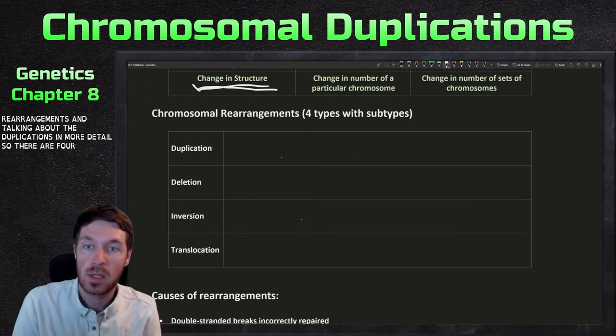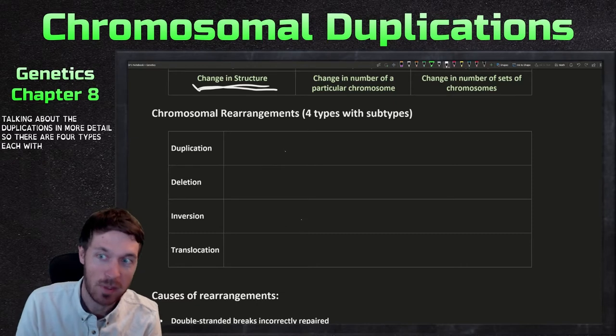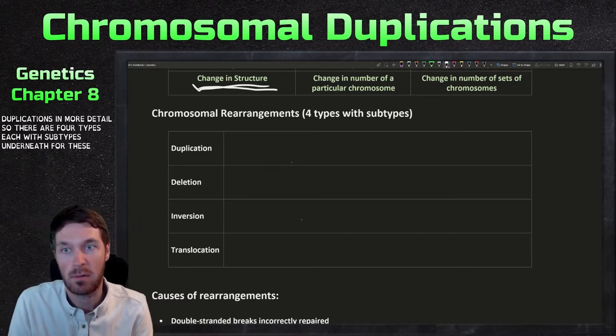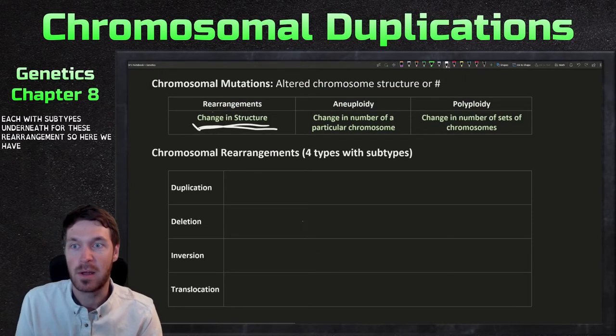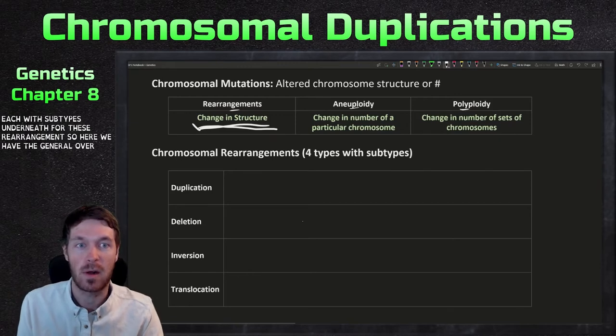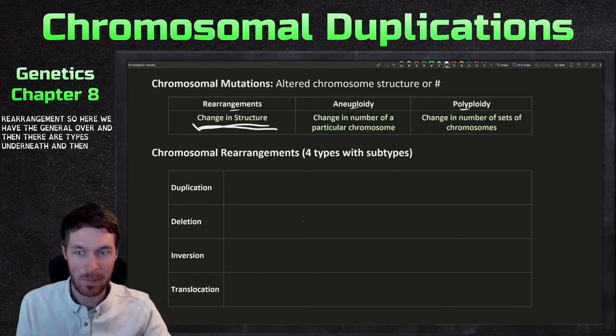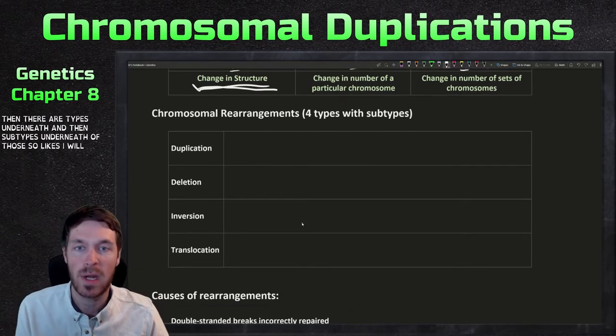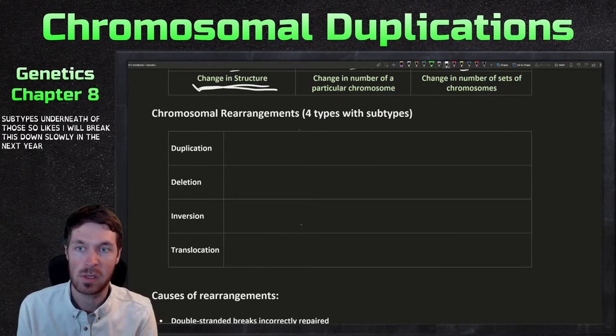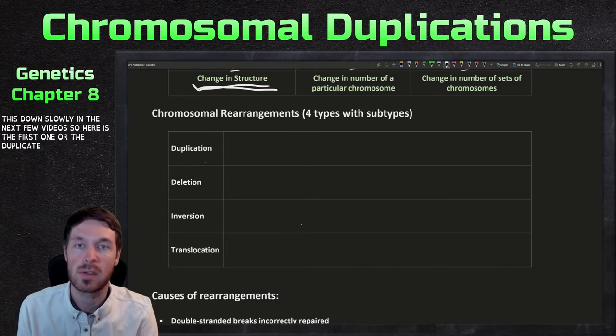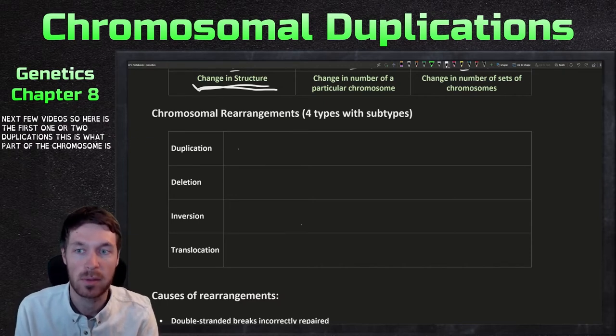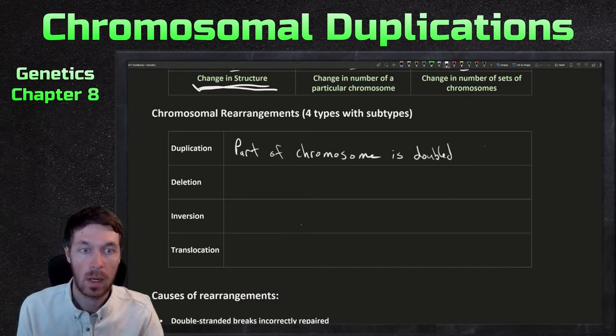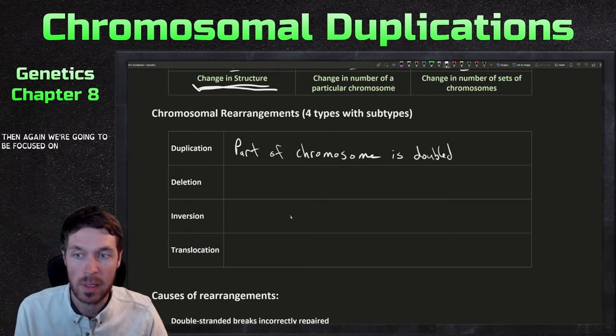There are four types, each with subtypes underneath for these rearrangements. So here we have the general overview, and then there are types underneath and subtypes underneath of those. So like I said, we'll break this down slowly in the next few videos. So here for chromosomal rearrangements, the first one are the duplications. This is where part of the chromosome is doubled. And again, we're going to be focused on that one today.